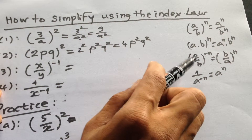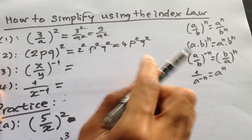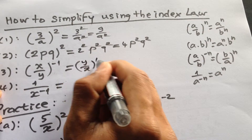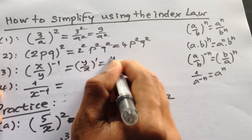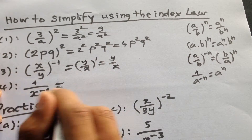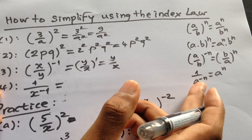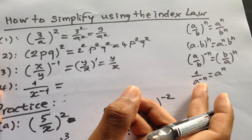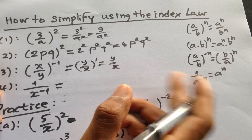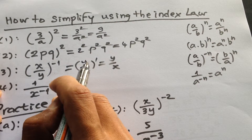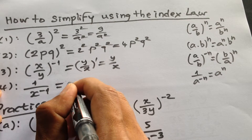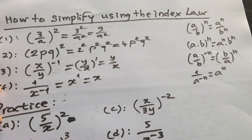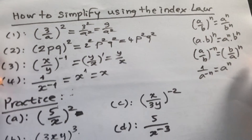And then here we have another formula. Divide: minus y divided by x to the power 1, and y divided by x. We have the formula: 1 divided by a to the power minus n equals a to the power n. So if we have x to the power 1, that equals x.